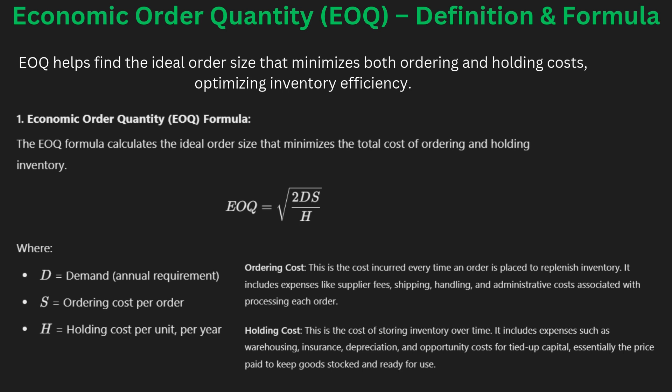ABC analysis is a technique that divides inventory into three categories. Category A items are the most valuable but ordered in small quantities. Category B items are moderately valuable and ordered at a medium level. Category C items are the least valuable but ordered in large quantities. This system helps businesses focus more on managing A items, which contribute the most to cost.